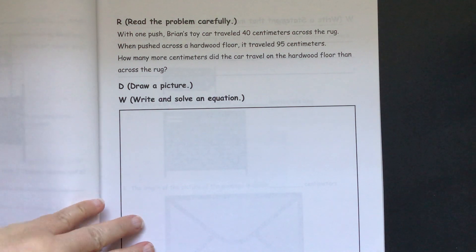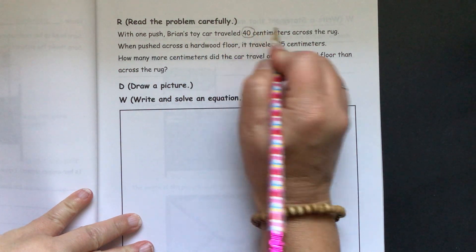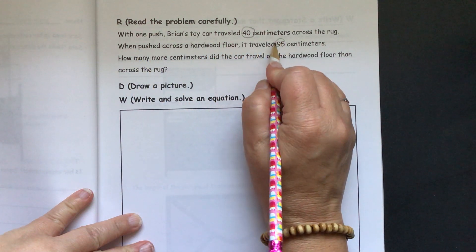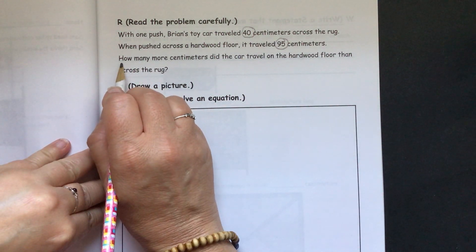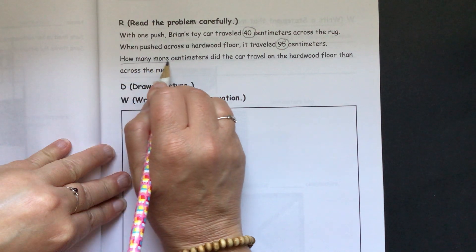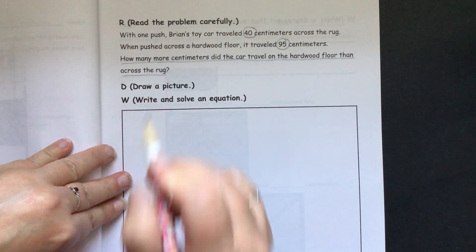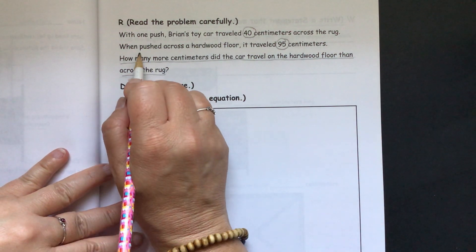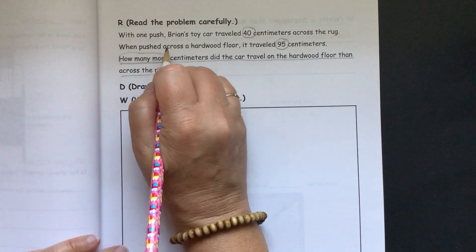So we circle our key information. His toy car traveled 40 centimeters across the rug, and it traveled 95 centimeters across the hardwood floor. And our question is, how many more centimeters did the car travel on the hardwood floor than across the rug? If you remember from last time, when we have how many more, that's gonna tell us to subtract.